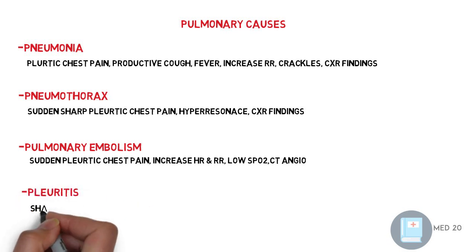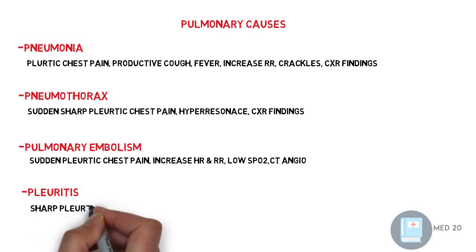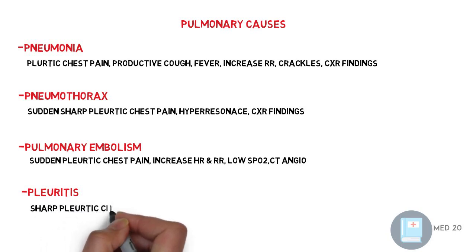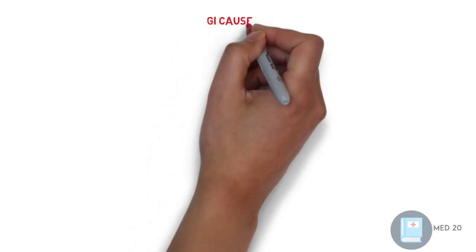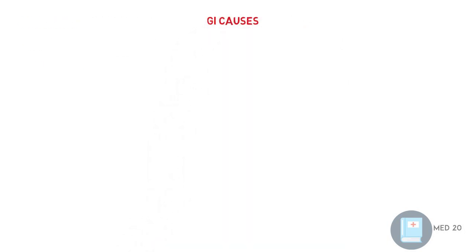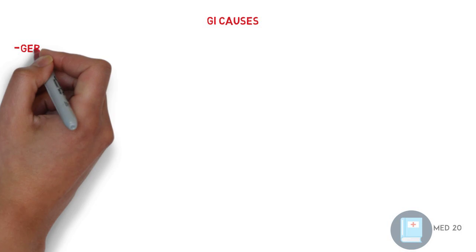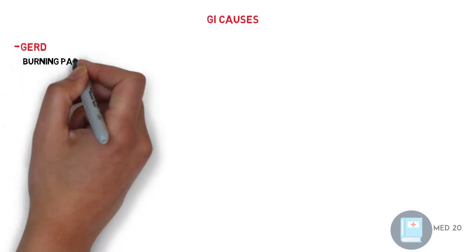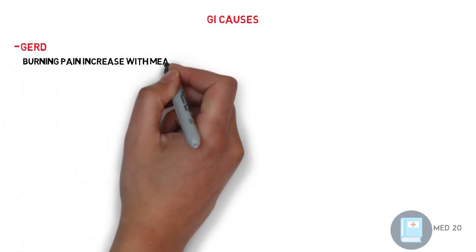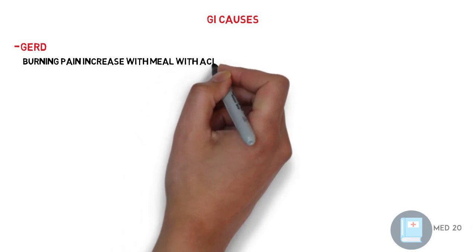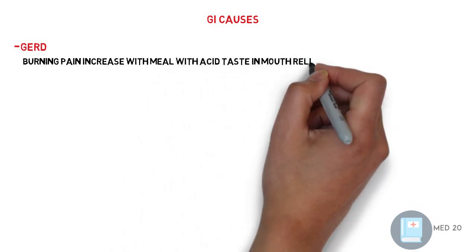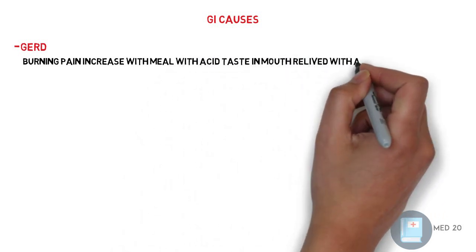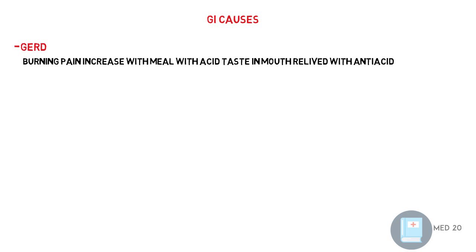Pleuritis, which is sharp pleuritic chest pain. GI or gastrointestinal causes — first and most commonly is GERD, or gastroesophageal reflux disease. It comes with burning pain, increased with meals, and with an acidic taste in the mouth, relieved with antacids like PPI.